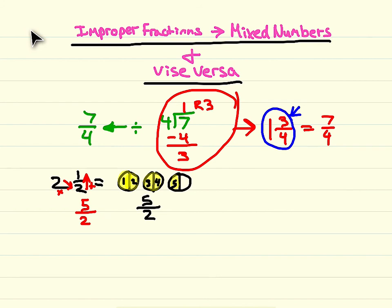So again, in order to turn a mixed number like 2 and 1 half into an improper fraction, take 2 times 2 plus 1 and you get 5 and keep your denominator of 2.